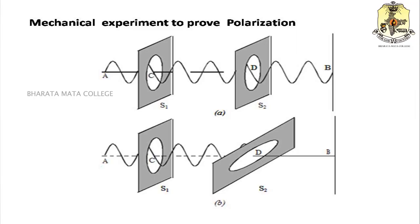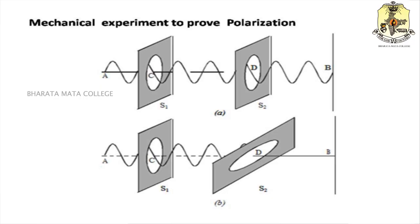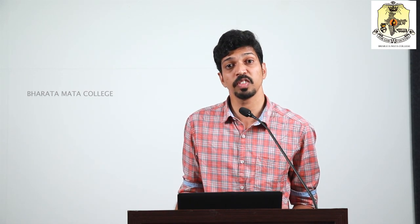Now consider the case where slit S1 is fixed and slit S2 is rotated. When we rotate S2, the wave vibration does not completely reach B. When S2 is exactly perpendicular to S1, there is no vibration occurring beyond S2. This is because the wave acquires a property after passing through S1 — the vibrations occur only along a particular line, meaning the waves get polarized. That is why when the slit is perpendicular to the vibration, we get no output. This mechanical experiment proves the concept of polarization.